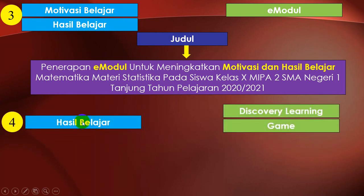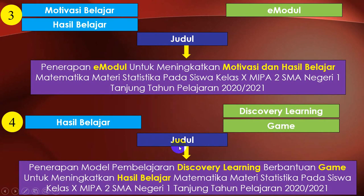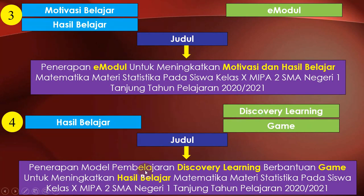Contoh keempat: ini masalahnya satu, solusinya dua. Bagaimana membuat judulnya? Judulnya seperti ini: Penerapan Model Pembelajaran Discovery Learning Berbantuan Game. Karena game itu media, maka dikasih kata 'berbantuan' sebelum kata game. Jadi model dulu, kemudian media diberi kata 'berbantuan'. Penerapan Model Pembelajaran Discovery Learning Berbantuan Game Untuk Meningkatkan Hasil Belajar.